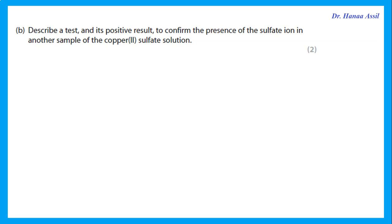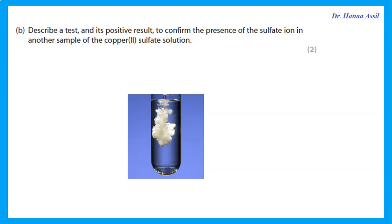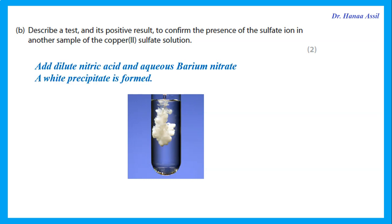To confirm the presence of the sulfate ion in a sample of copper(II) sulfate, add dilute nitric acid and aqueous barium nitrate — or hydrochloric acid with barium chloride. If sulfate is present, a white precipitate of barium sulfate forms in the solution.